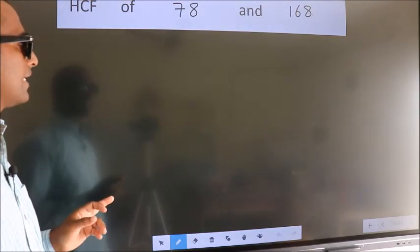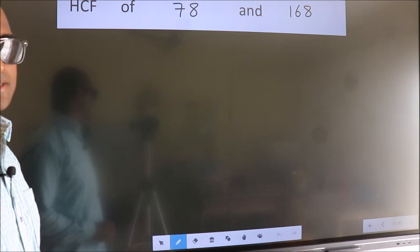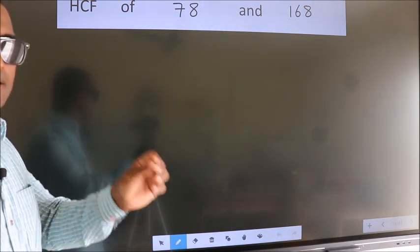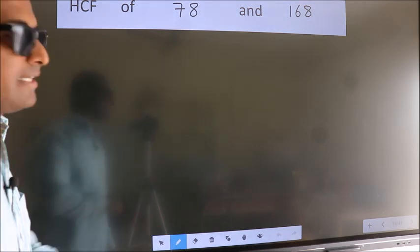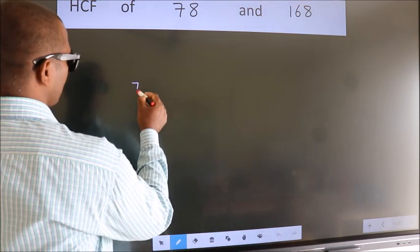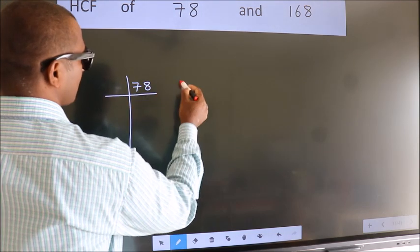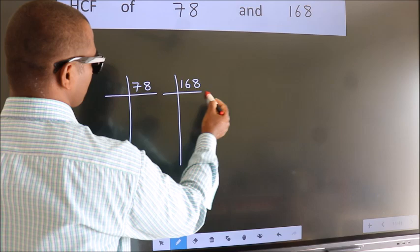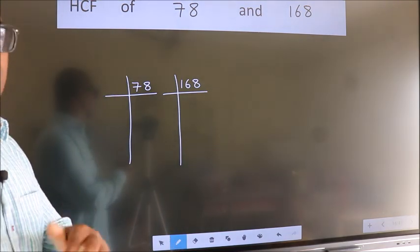HCF of 78 and 168. To find the HCF, we should do the prime factorization of each number separately. What I mean is, 78 here, 168 here. This is your step 1. Next.